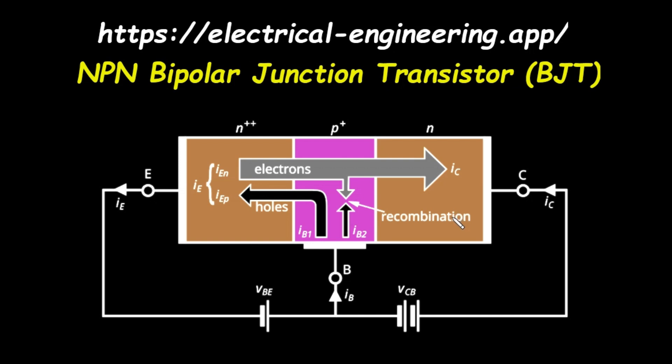Let's start by examining the diagram. What we see here is a cross-section of an NPN bipolar junction transistor connected to an external circuit. A transistor has three main regions, each with a terminal for connection. On the left, we have the emitter, labeled with an E. In the middle, we have the base, labeled with a B. And on the right, we have the collector, labeled with a C.